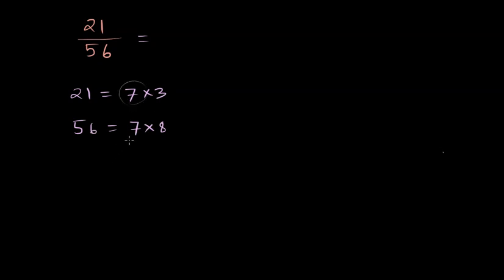Now the common thing that you see for both of them is 7, and we will divide both the numerator and denominator by 7. If we divide 21 by 7, we get 3 in the numerator and in the denominator, we get 8.